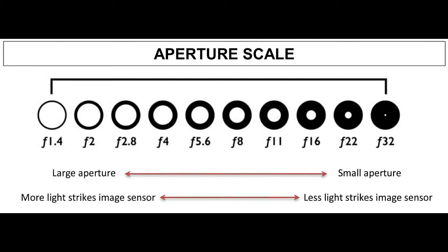It is also important to remember that every previous f-stop allows twice as much light as the next one. For example, f/2.8 allows twice the amount of light that f/4 does, and so on.